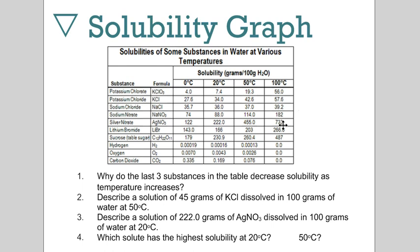Just for a minute, pour over these data and let's talk about these four questions. Why do the last three substances in the table decrease solubility as temperature increases? They are gases, and we learn that solubility decreases as you increase temperature for gases.